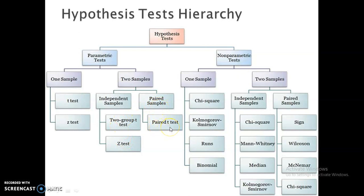Likewise if I'm going on the non-parametric test side, again if it is a one sample or two samples. If the value of n is one or two, if it is one sample under non-parametric test we will go for chi-square test, Kolmogorov-Smirnov test, runs test, binomial. Likewise if it is two samples, we will check independent samples or paired samples. Under independent samples it is chi-square test, Mann-Whitney test, median test, Kolmogorov-Smirnov test. And likewise paired samples: it is sign test, Wilcoxon test, McNemar test, and chi-square test.